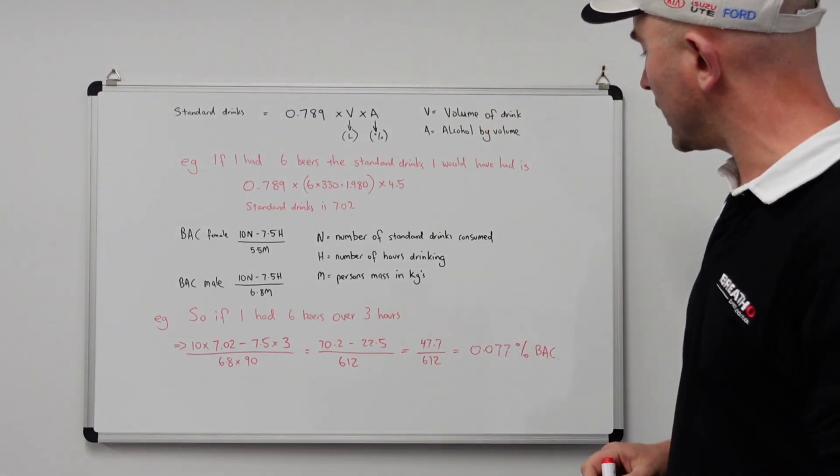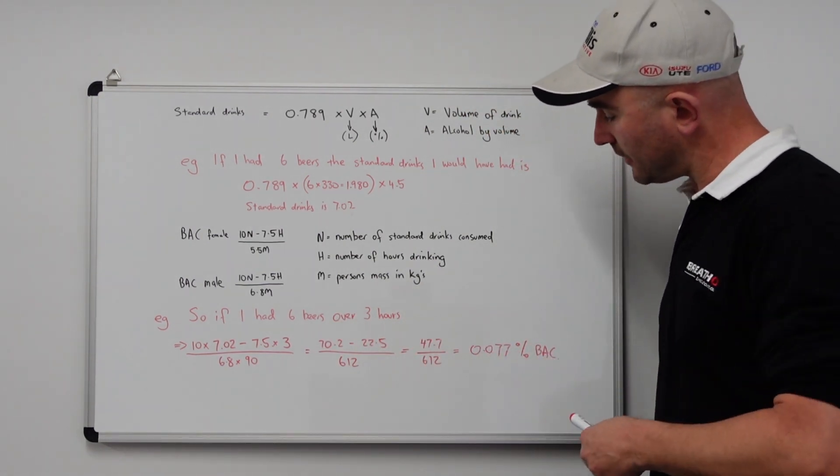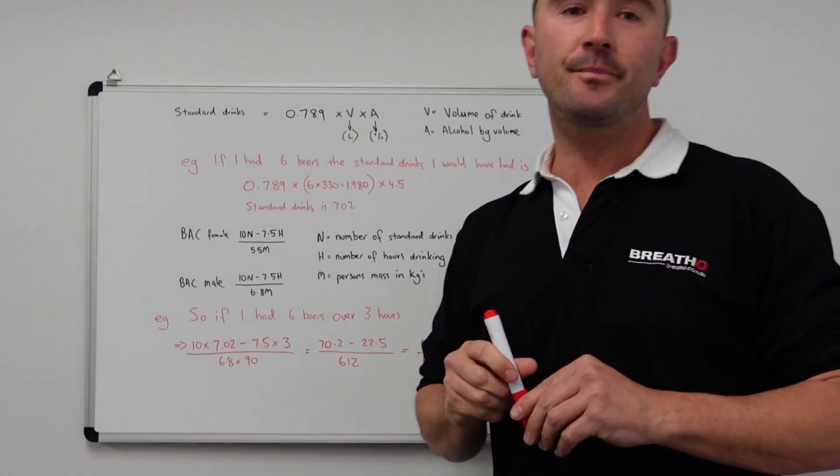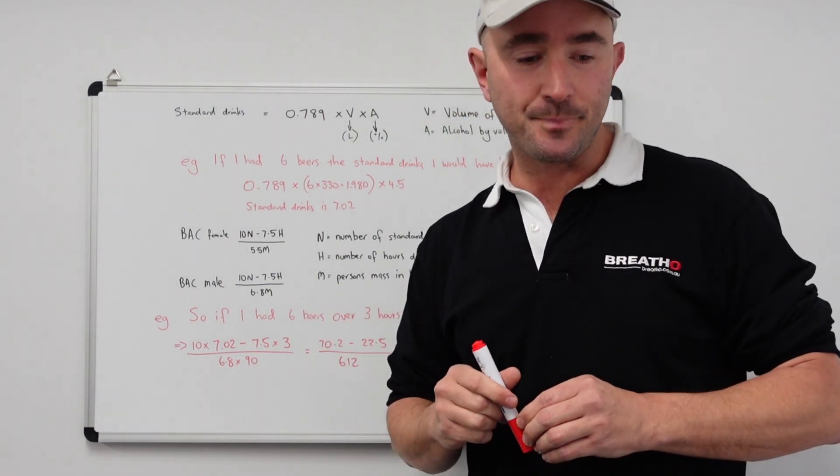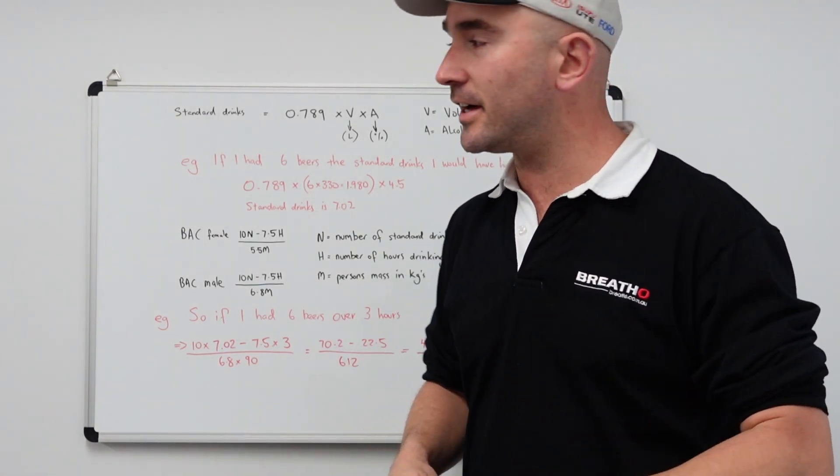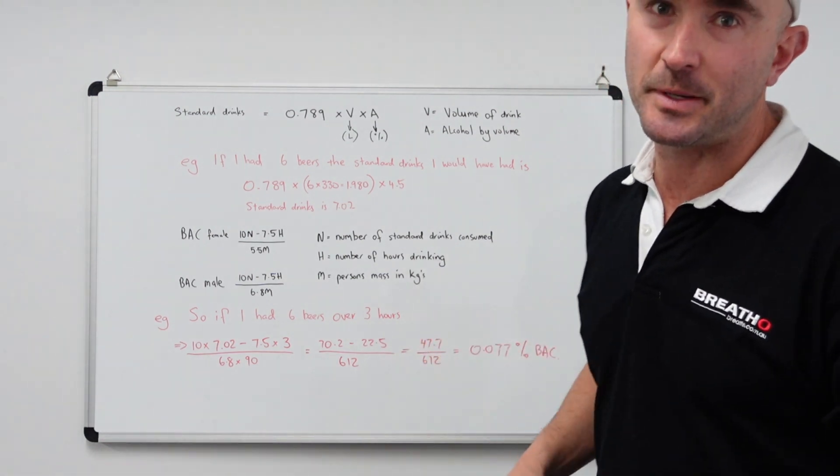That all the way works out to be an estimate of 0.077% blood alcohol content. Now, this is just an estimate. The best way to know your blood alcohol content would be to use a breathalyzer. But if you don't have a breathalyzer, this is the next best thing.